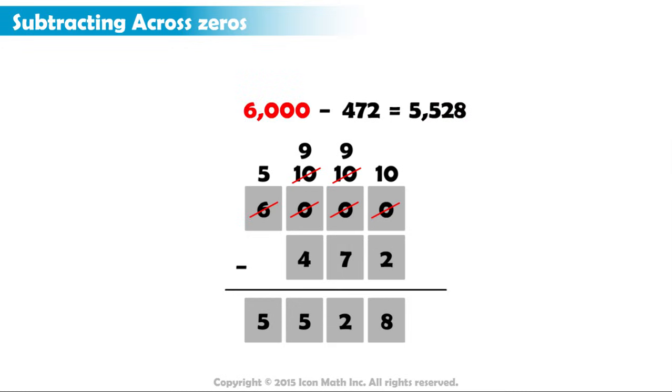So, if we have many zeros in the minuend, we have to keep looking to the left until we find a non-zero digit we can borrow from.